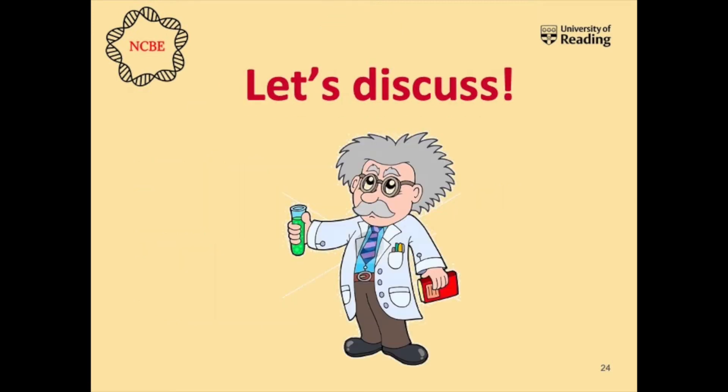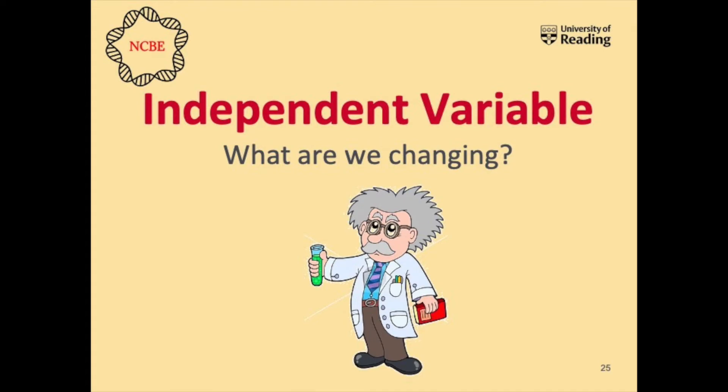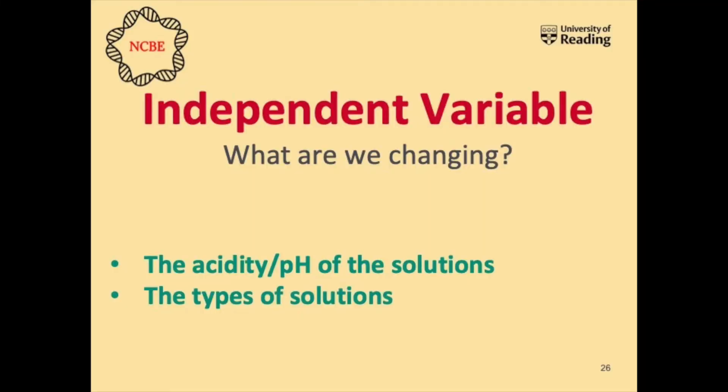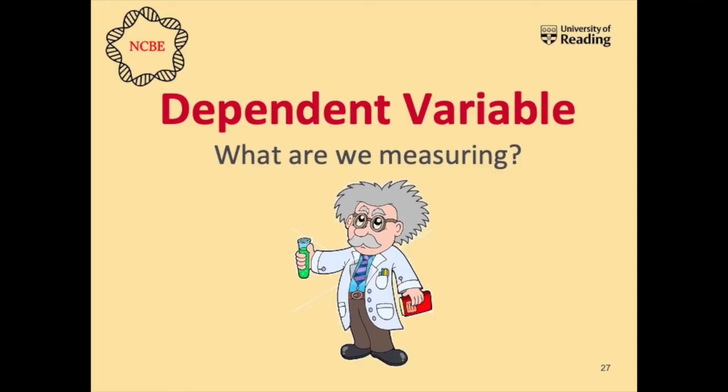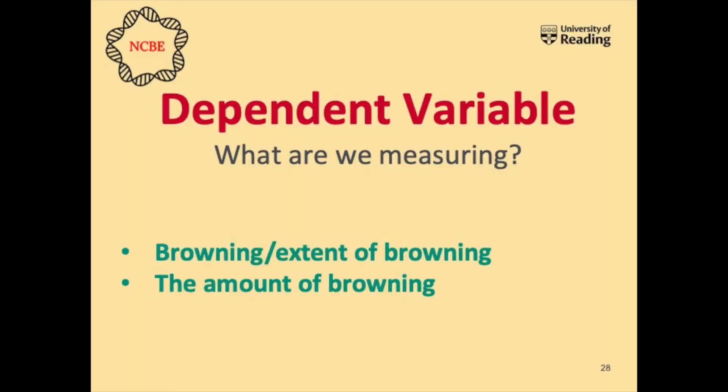We'll discuss your hypothesis after the experiment, but for now let's discuss your variables. What was your independent variable? If you said the acidity or the pH of the solutions, you are right — each piece of fruit or vegetable is going to be in a different solution that varies in pH. And your dependent variable? If you said the browning or the extent of browning, you are absolutely right.